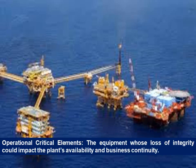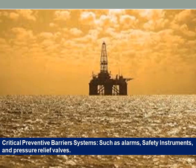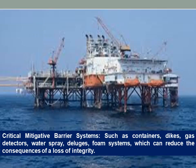Operational critical elements are the equipment whose loss of integrity could impact the plant's availability and business continuity. Critical preventive barrier systems include alarms, safety instruments, and pressure relief valves. Critical mitigative barrier systems, such as containers, dikes, gas detectors, water spray, deluges, and foam systems, can reduce the consequences of a loss of integrity.